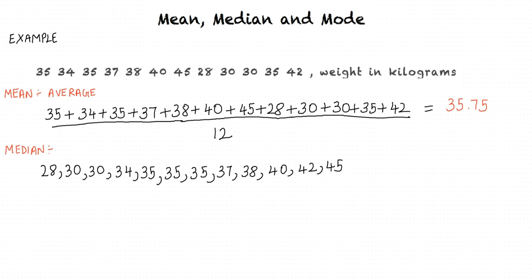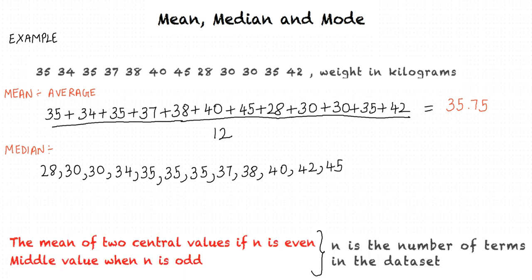Let us now proceed to calculate the median. The median is the middle value of the data set. The formula for the median of n values is: the mean of the two central values if n is even, or the middle value if n is odd. There are 12 values in this data set, so the median is the mean of the two central numbers, which are 35 and 35. Thus the median is (35 + 35) / 2 = 35.